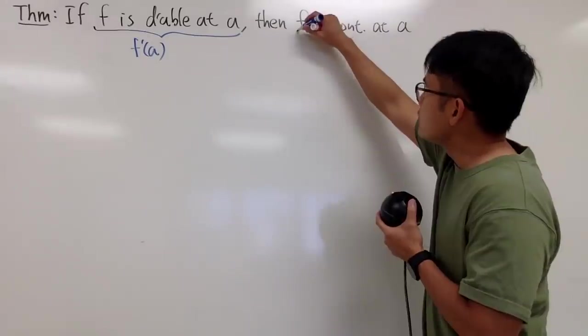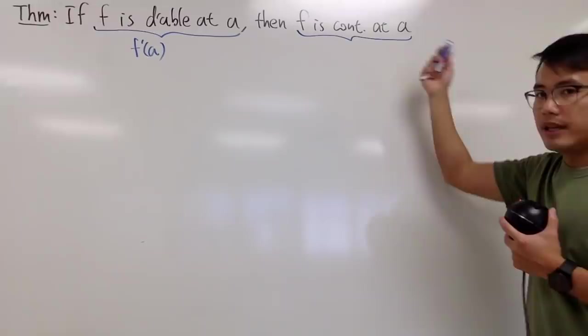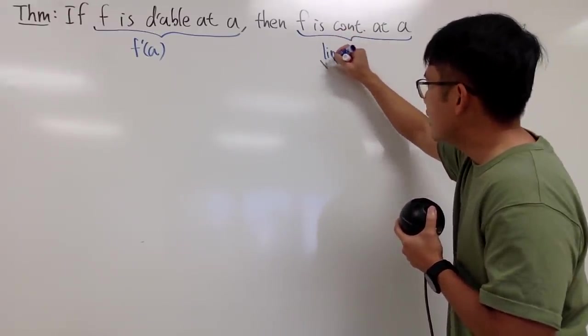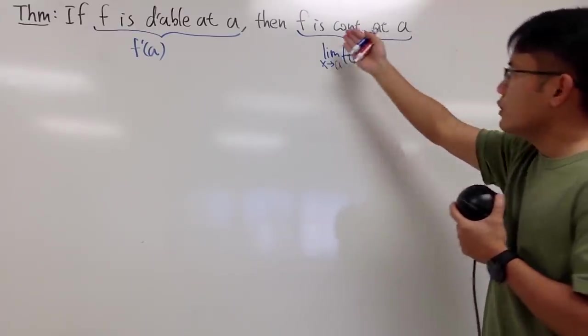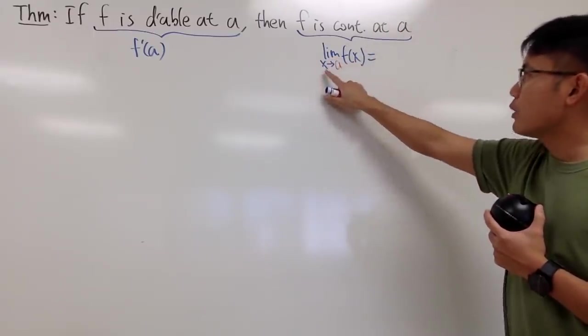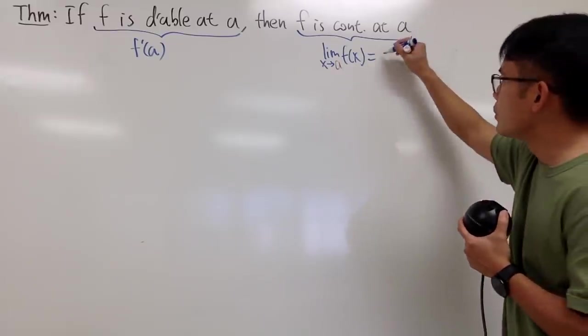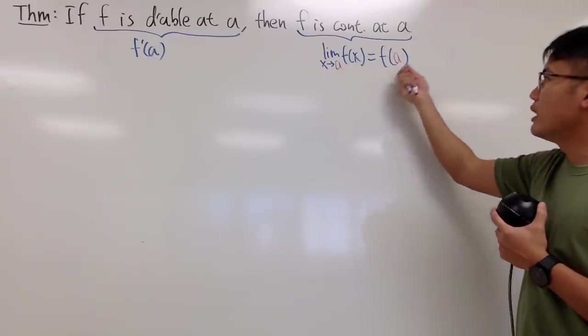And right here, this is what we're trying to show. f is continuous at a, and remember the definition is that the limit as x approaching a of the function, in order for f to be continuous at a, the limit when x is approaching a of the function has to be equal to the value of the function. So the limit is equal to f of a.